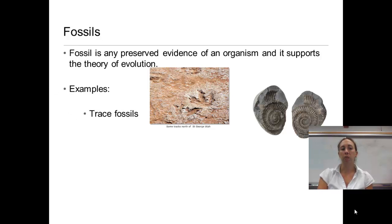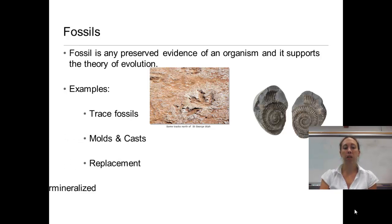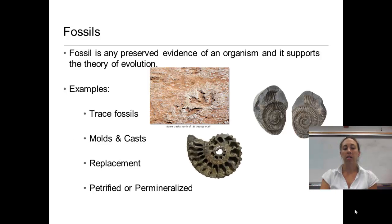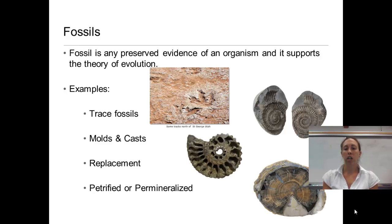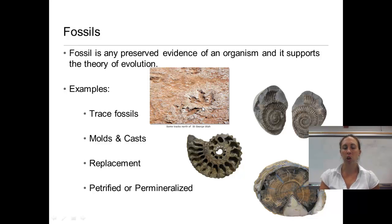Examples of fossils include trace fossils, molds and casts, placement, and petrified or permineralized fossils. Here are some pictures — petrified wood in the corner, and foot imprints here, which would be imprints of an animal's tracks.